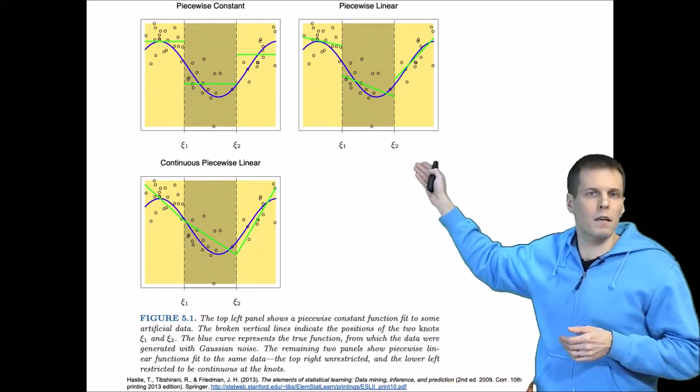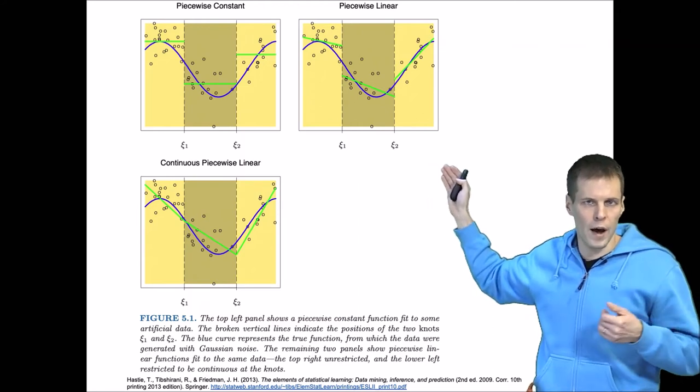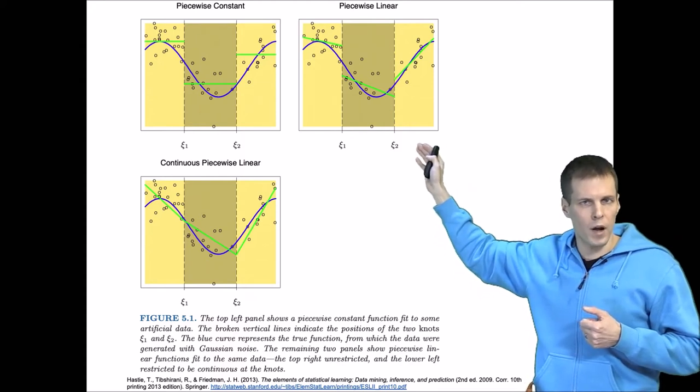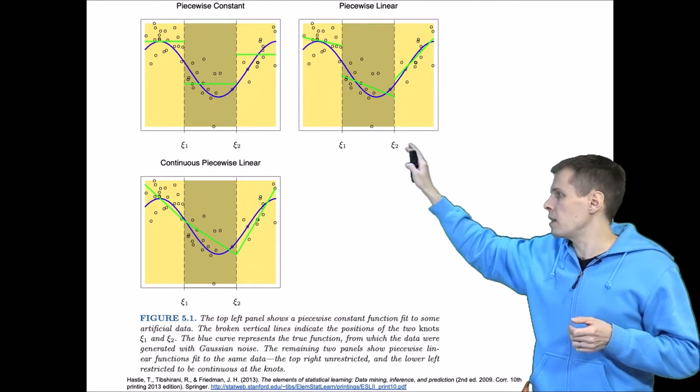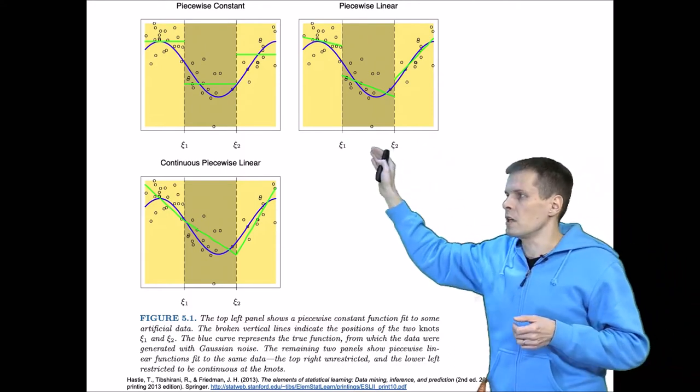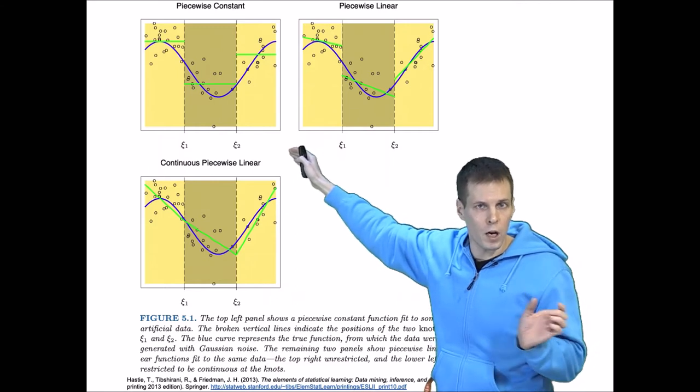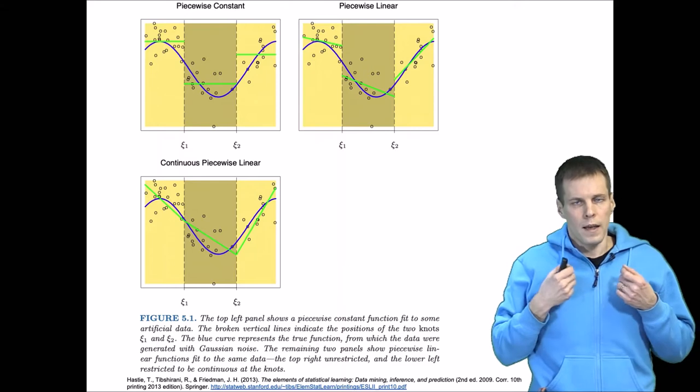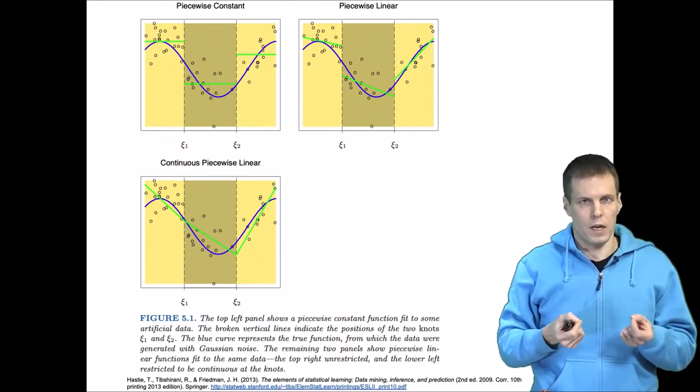And in the second part we are estimating a different regression line for each part of the data. So this is basically running three separate regressions on the same data, splitting the data into three subsamples, and this is simply calculating means for three parts of the data. And these knots are estimated from the data, but how exactly that is done we'll get to that in a moment.